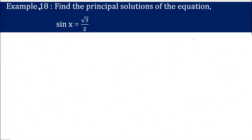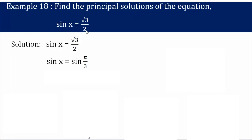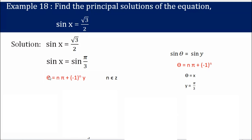Example 18: Find the principal solution of the equation sin x = √3/2. We can write sin x = sin(π/3), since √3/2 is nothing but sin(π/3). This equation is now similar to sin θ = sin y, and to find the principal solution we use the relation θ = nπ ± (−1)^n · y, where θ = x and y = π/3.